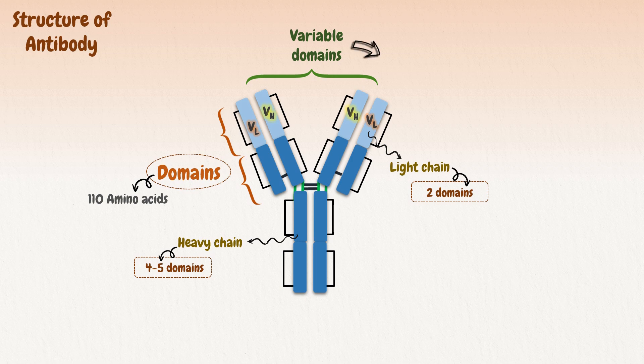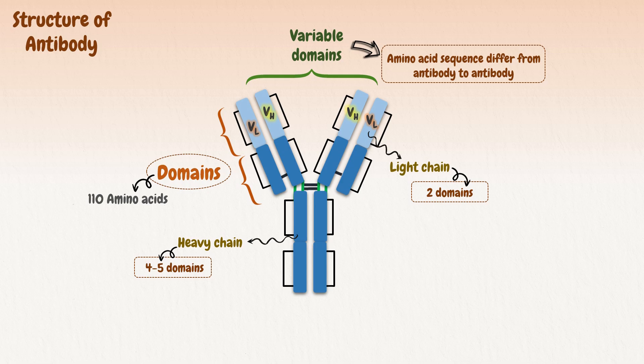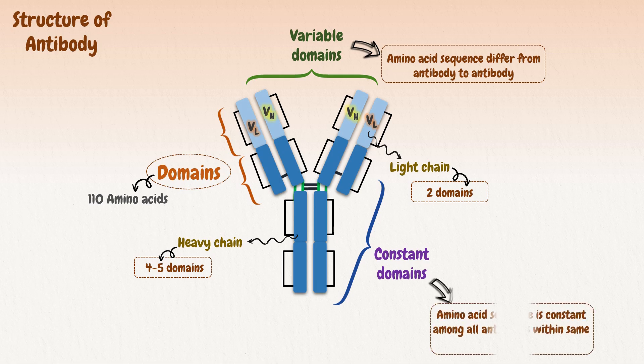Why are they called variable? Because the amino acid sequences of these domains were found to differ from antibody to antibody. This variability is limited to approximately 110 amino acids. On the other hand, the remaining domains are called constant region domains, because they do not differ to the same extent from antibody to antibody.